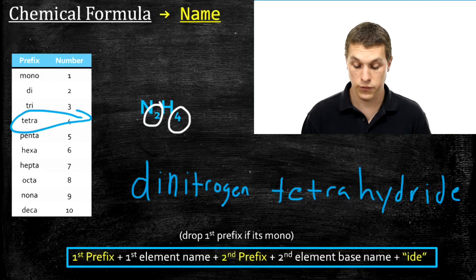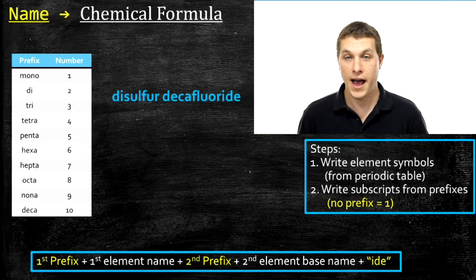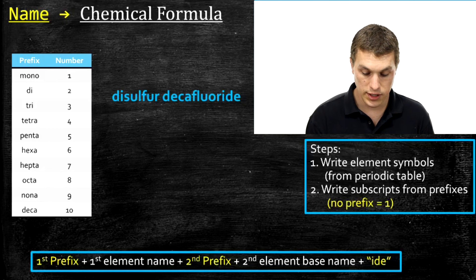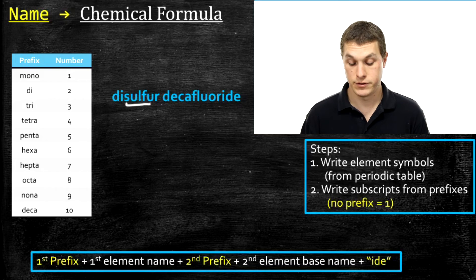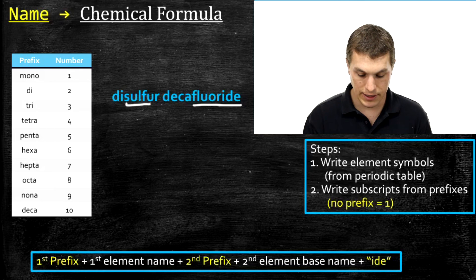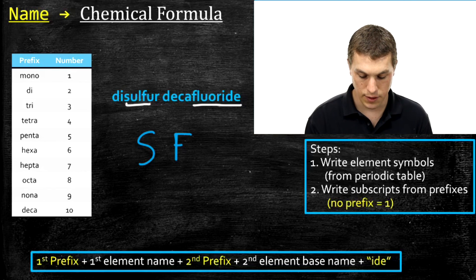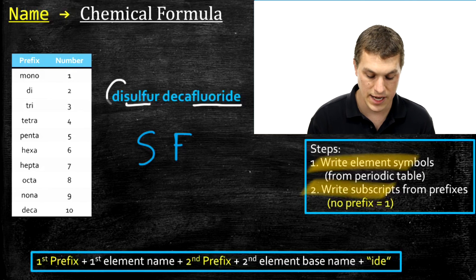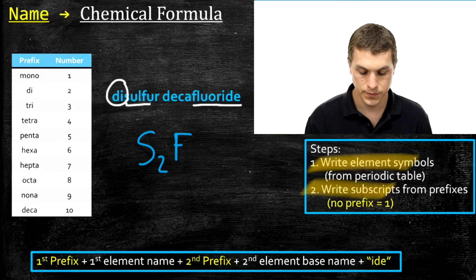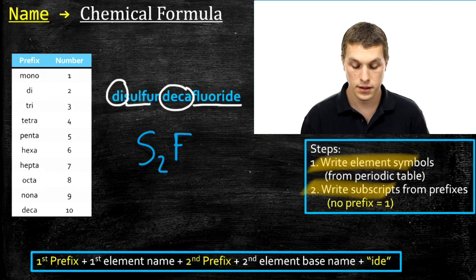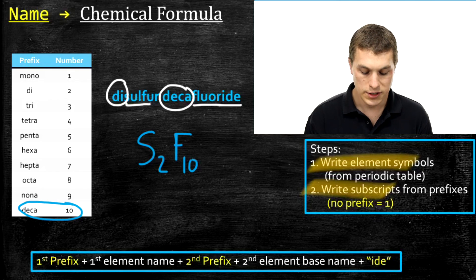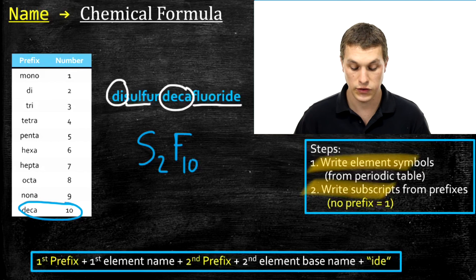Now let's go the other direction — from a name to a chemical formula. For example, given a name, first identify the elements. Say we have sulfur and fluoride, meaning sulfur and fluorine. Write the chemical symbols S and F. Then write the subscripts based on the prefixes: di means two sulfurs, and deca means ten fluorines. The biggest challenge here is memorizing the list of prefixes.